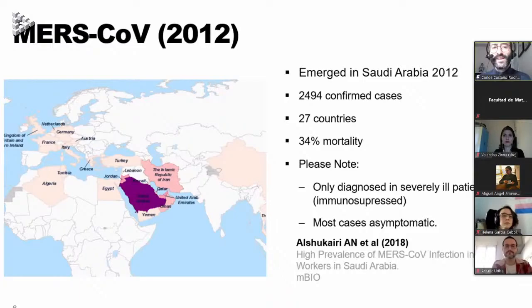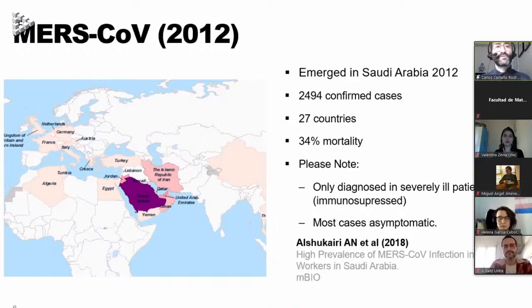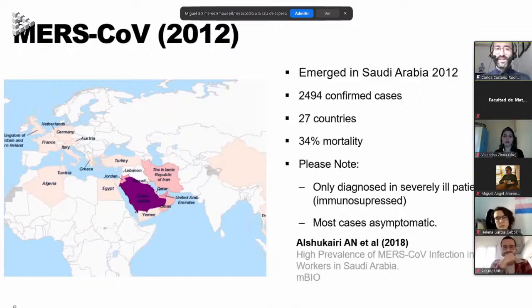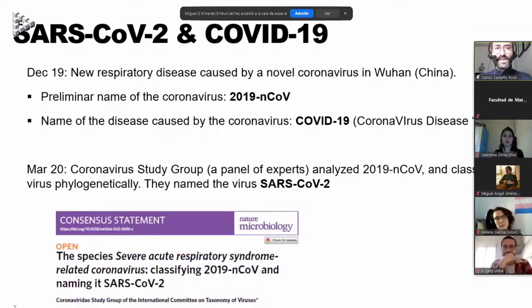Many people were infected by MERS coronavirus and were not aware because they were asymptomatic. However, the only people clearly diagnosed with MERS are those who are very ill, in hospitals, and immunosuppressed, which are the ones who have the worst prognosis with MERS coronavirus.